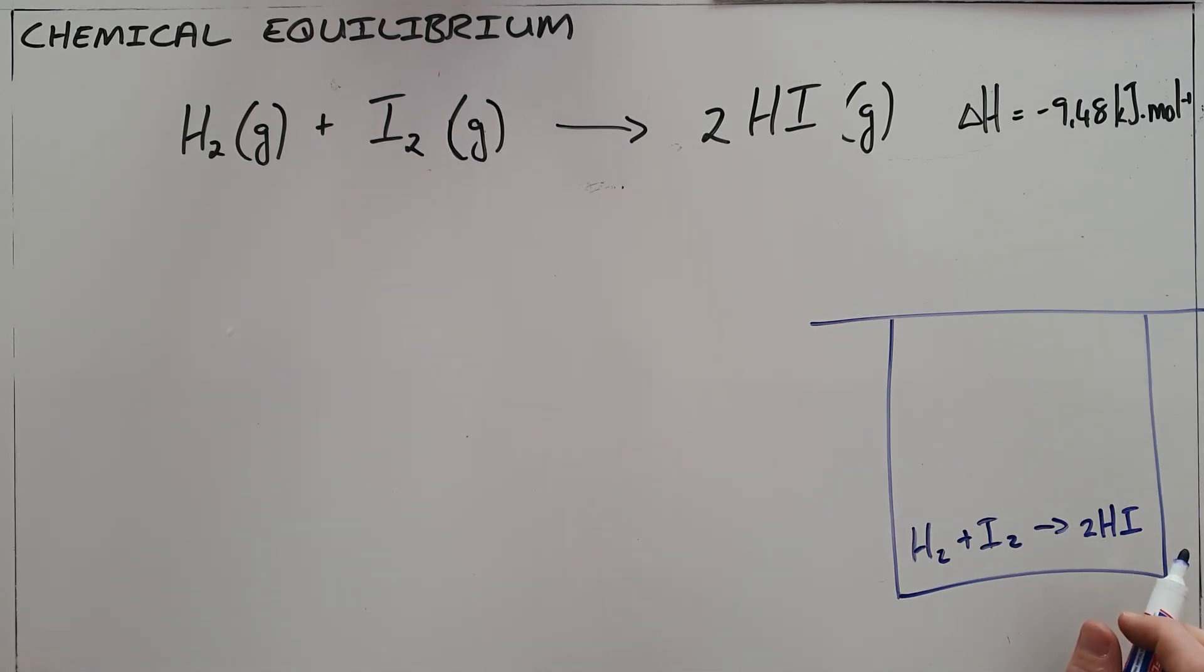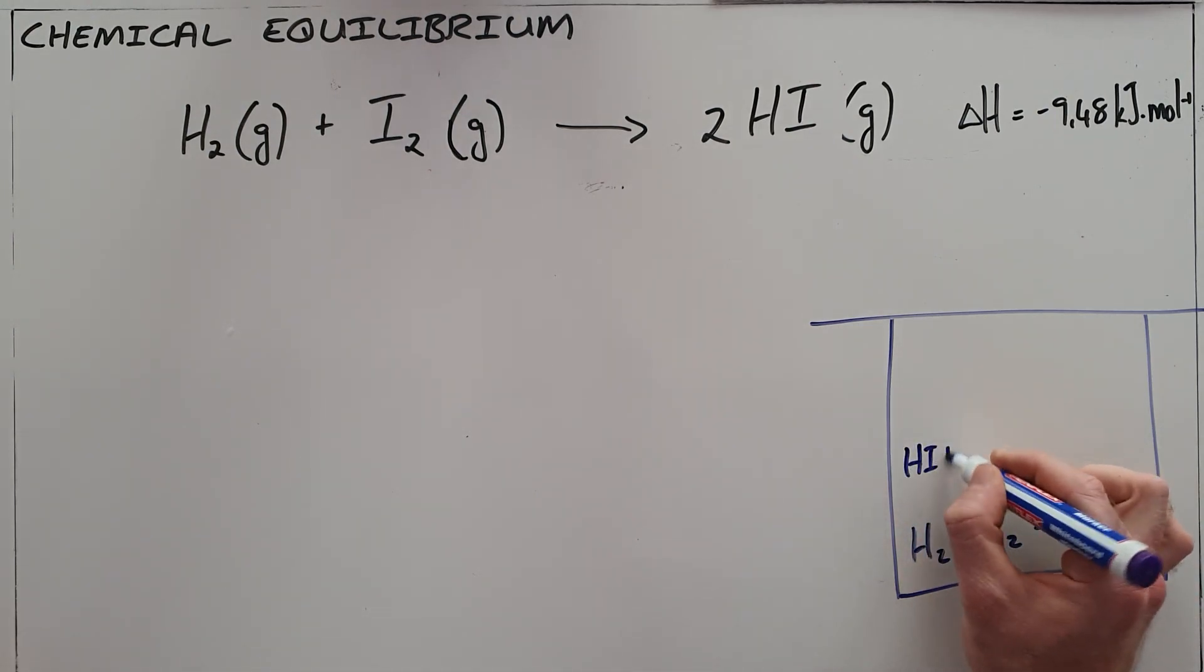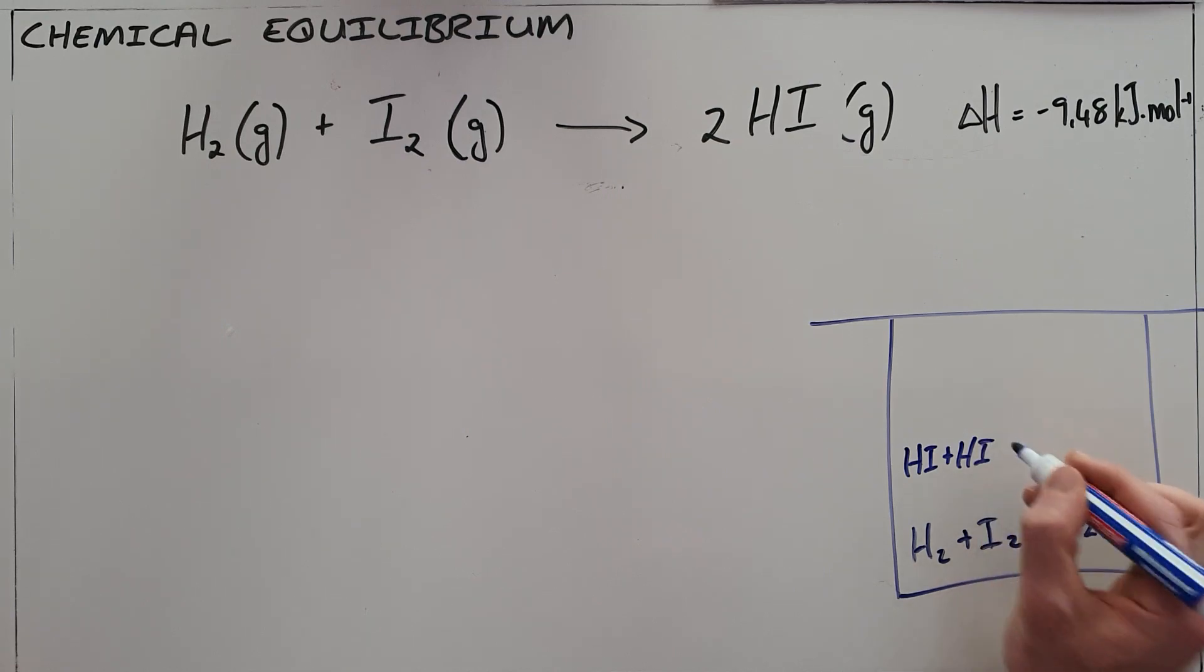What is also possible in many reactions is that they can be reversed. What that basically means is that two hydrogen iodide molecules can react with each other to break apart and form our original reactants once again.